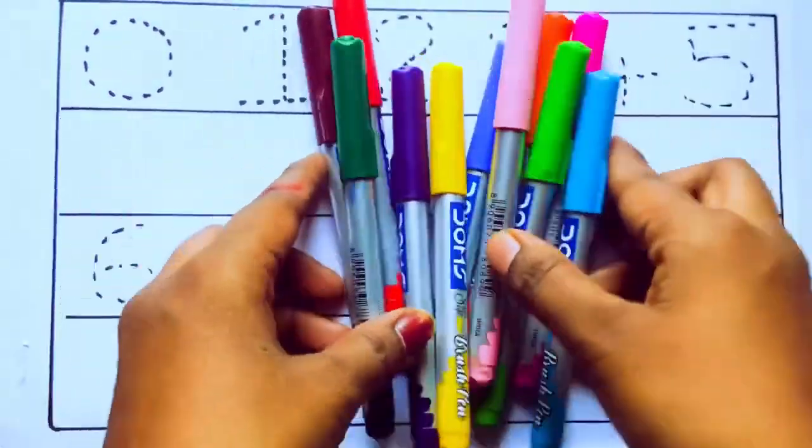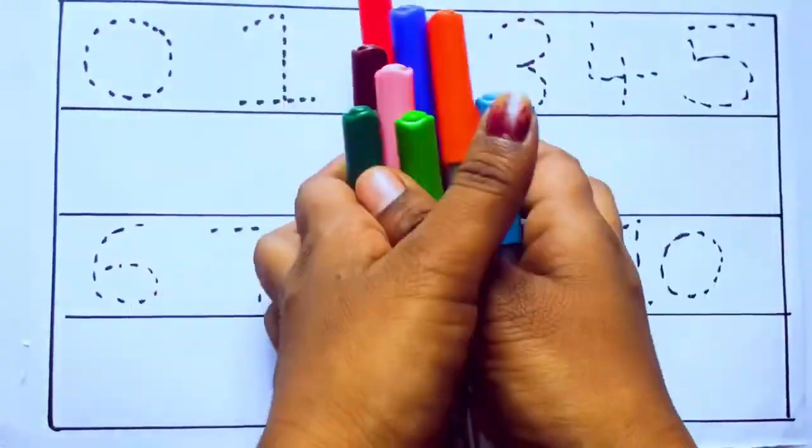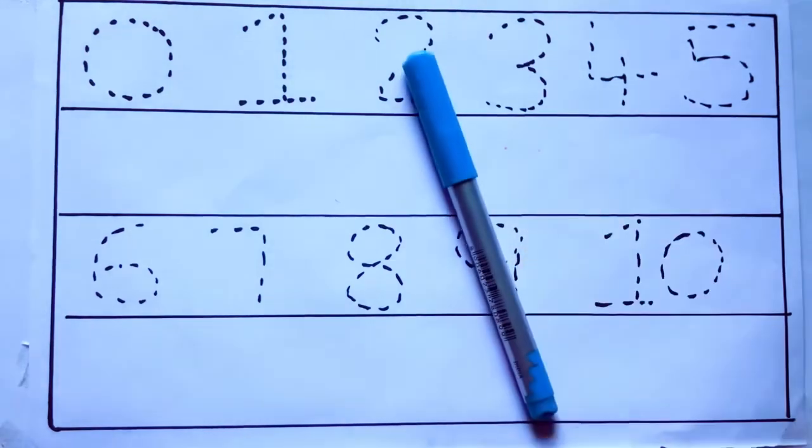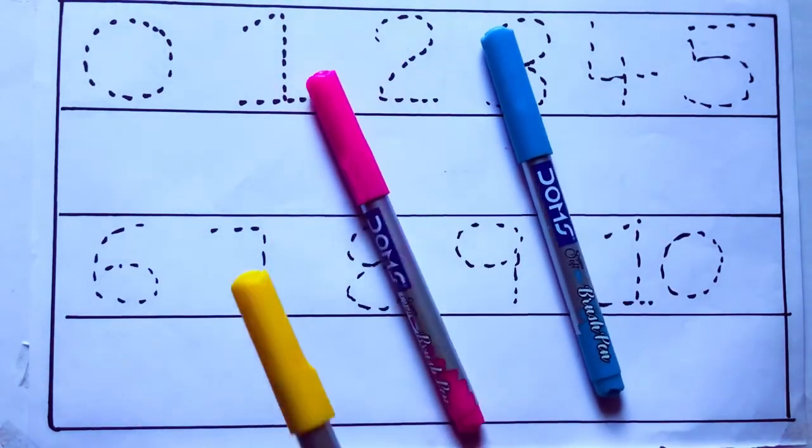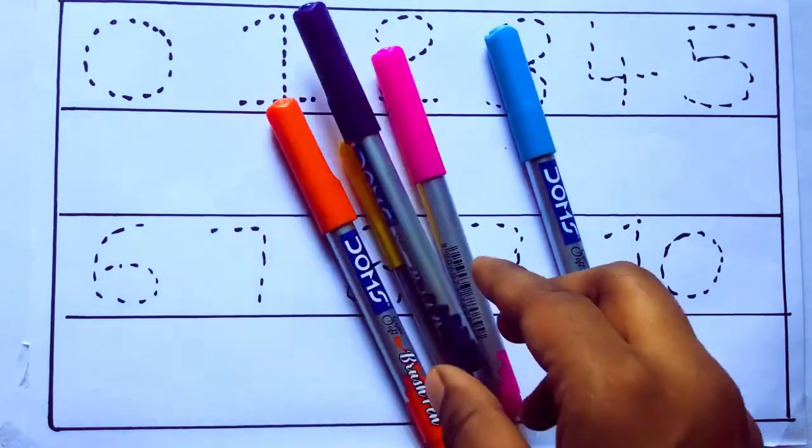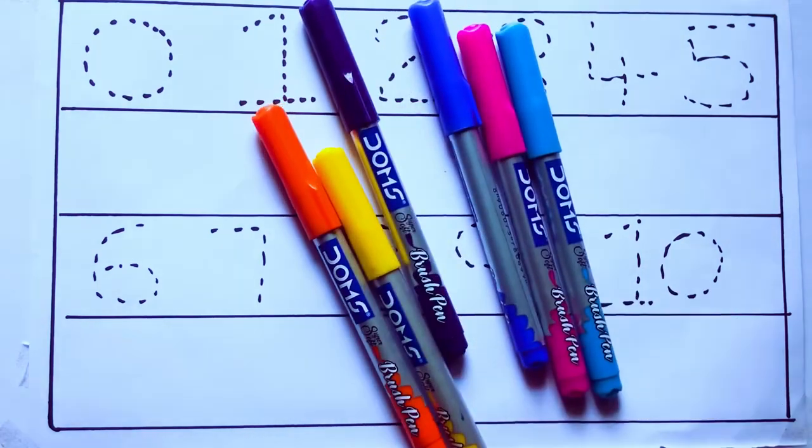Let's learn some colors. These are all the color pencils. Let's learn the names: sky blue color, pink color, yellow color, orange color, violet color, blue color,